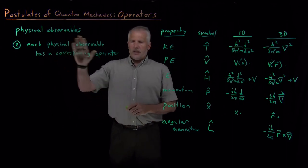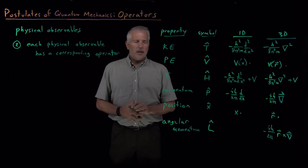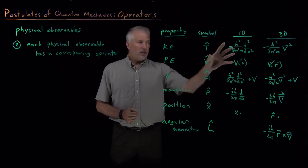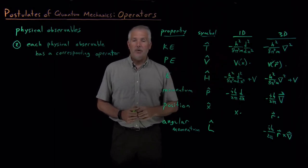So, again, second postulate tells us each property, any physical observable property that we're interested in has some operator associated with it. It's a little bit unclear for now how I use that operator to actually obtain a value for the property. So we need one more postulate to be able to tell us how to do that. And that's the next step.